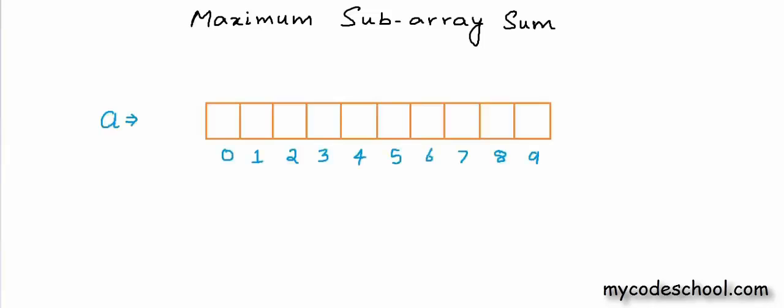Hi. Today we are going to solve an interesting problem. Given an array, we have to find a subarray whose sum is maximum among all possible subarray sums. This subarray will be referred to as the maximum sum subarray or the MSS.